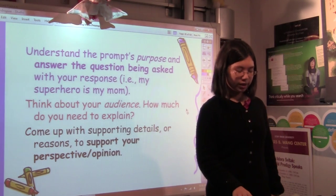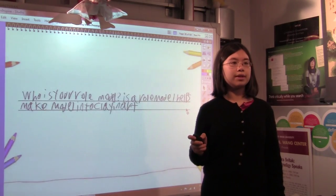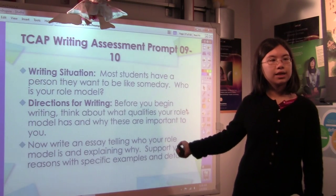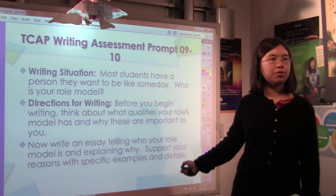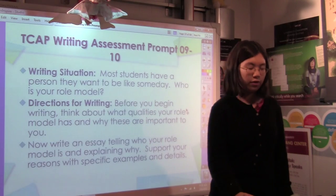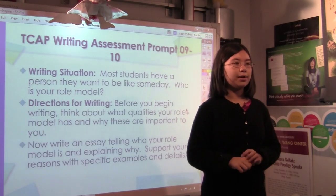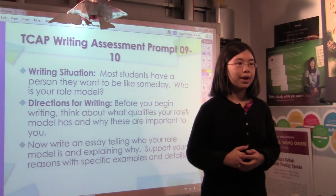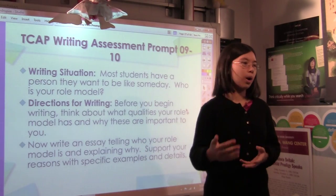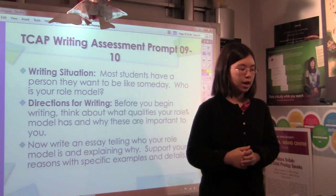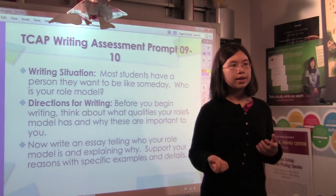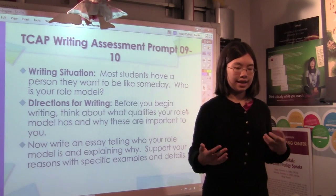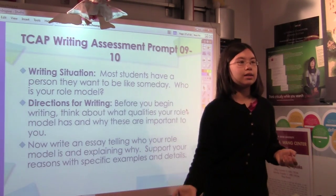Just focus on specific parts of the prompt. For instance, in this one — who is your role model? Think about what qualities your role model has, why these are important to you, and write an essay explaining who your role model is. So even if you can't think of a role model, think of some qualities that you think are important for people to have and sort of work backwards — who are people who have those qualities? For instance, I might say brave, adventurous, and work backwards to think of my sister or someone in history.